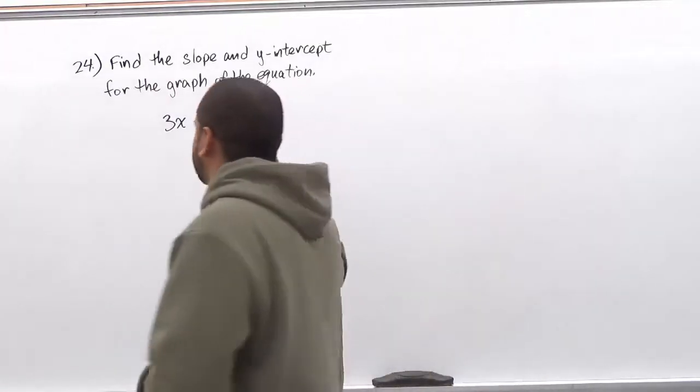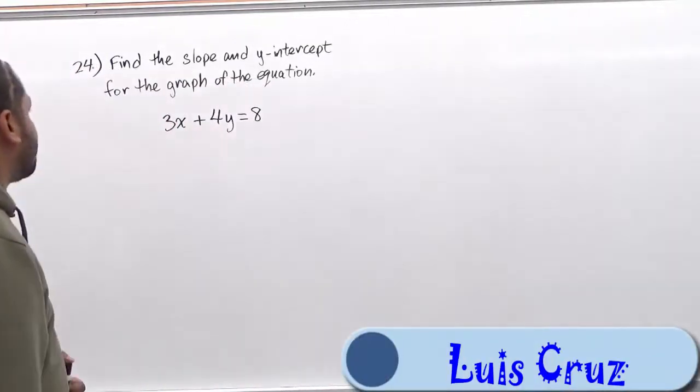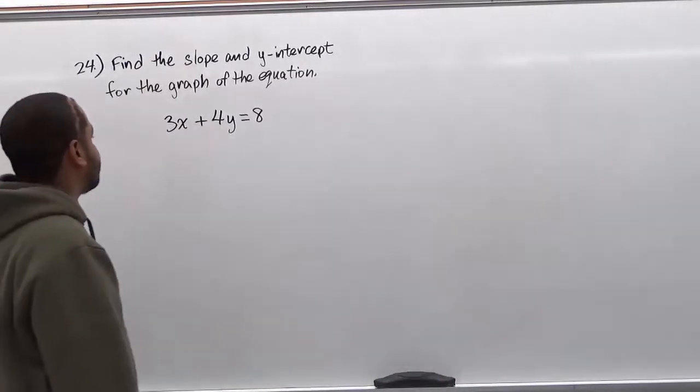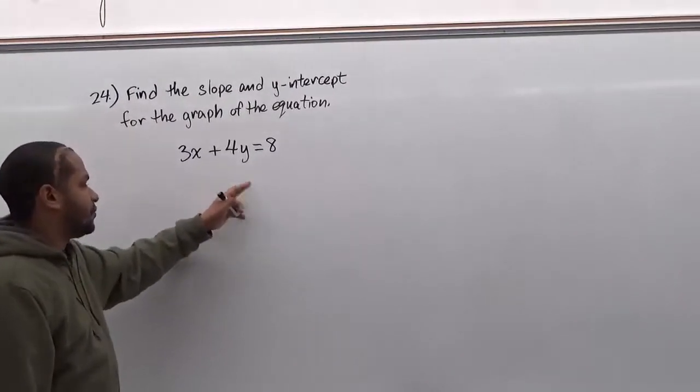Welcome to HelpYourMath.com. Today we'll be solving problem 24, which is finding the slope and the y-intercept for the graph of the equation. So here we have 3x plus 4y equals 8.